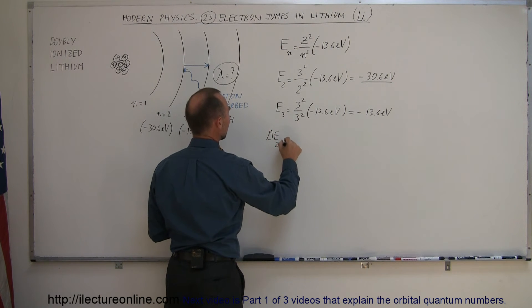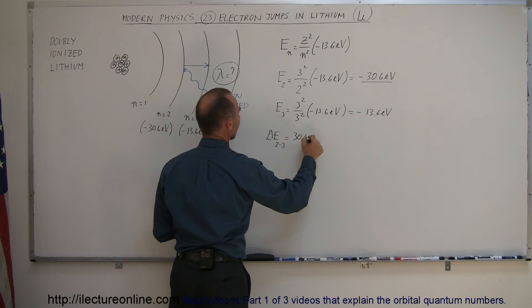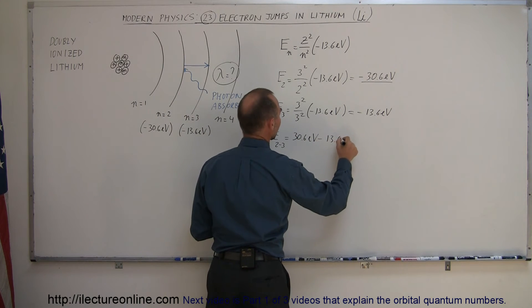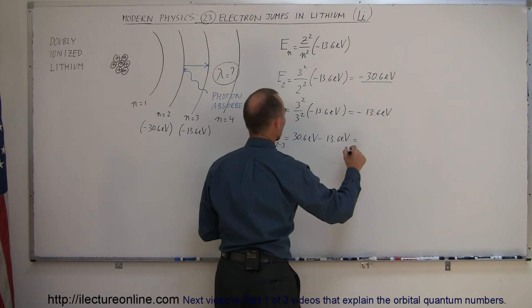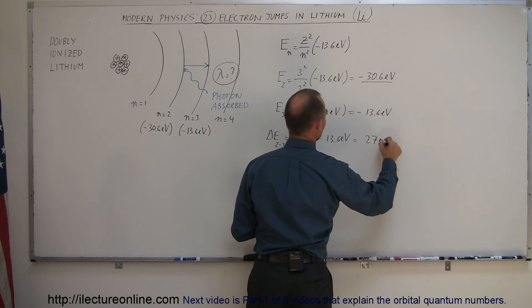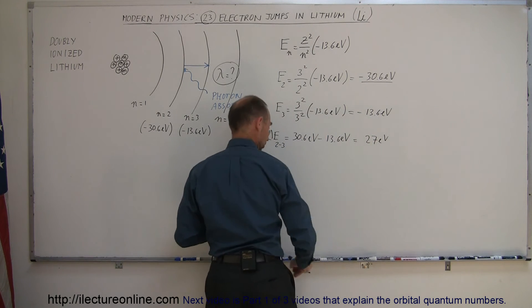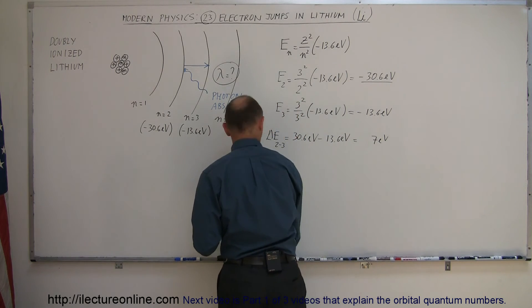between 2 and 3 is equal to 30.6 electron volts minus 13.6 electron volts. And that looks like it is 17 electron volts.